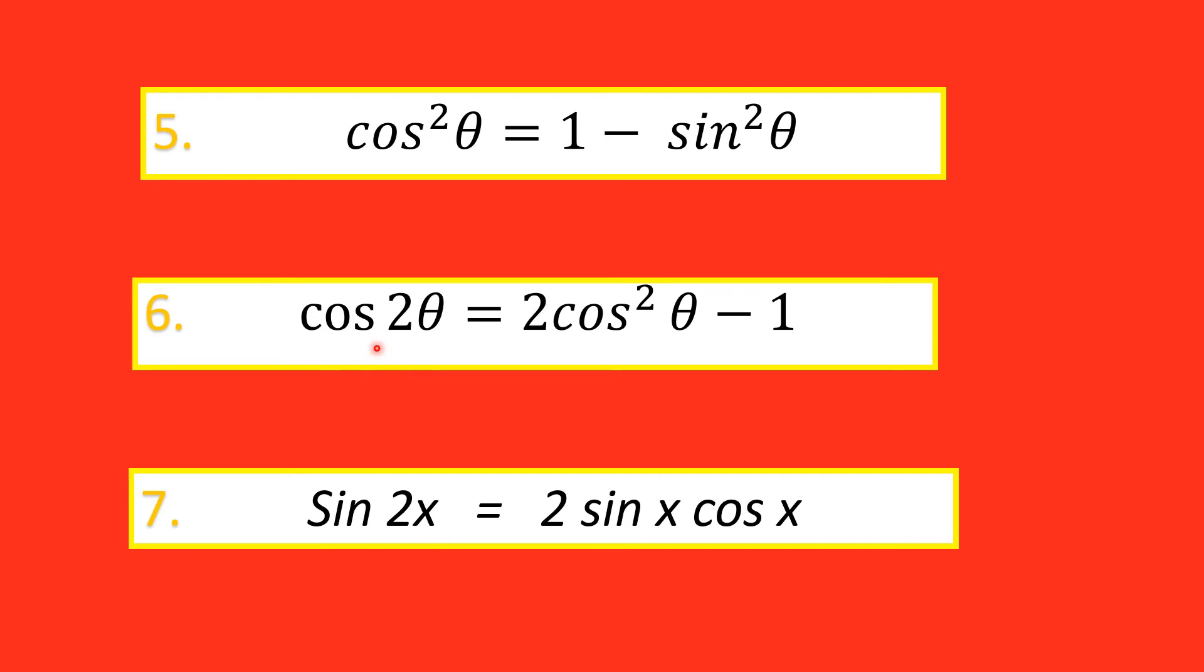The sixth formula states cos 2θ is equal to 2 cos square θ minus 1. Sin 2x is equal to 2 sin x cos x. Very simple.